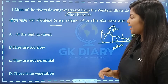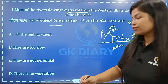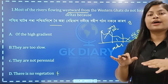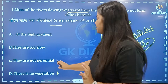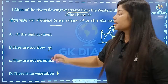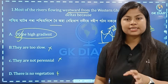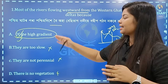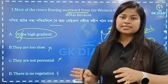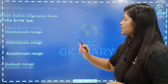Of the high gradient — the rivers are too slow, they are not perennial, there is no vegetation. If the river is slow, it will form a delta. The correct option is Option A: high gradient. This is a civil service level question. The river system is very important to know. The correct option is A.